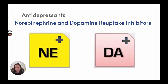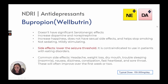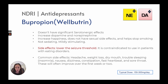Norepinephrine and dopamine reuptake inhibitors: bupropion, or Wellbutrin, is the one drug in this class. Typical dose is 150 to 300 milligrams a day. It has no significant serotonergic effects, increases happiness without sexual side effects, and helps individuals stop smoking. It is mildly stimulating rather than sedating. However, it lowers the seizure threshold and is contraindicated in patients with eating disorders at risk for electrolyte imbalances. Common side effects include headache, weight loss, dry mouth, insomnia, nausea, dizziness, constipation, fast heartbeat, and sore throat, but these usually improve in the first week or two.